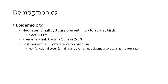Epidemiology: small cysts are present in up to 98% of women, with around 20% measuring more than 1 cm. Pre-menarche cysts more than 1 cm occur in 2 to 5%. Post-menarche cysts are very common. Non-functional cysts and malignant ovarian neoplasms also occur at a greater rate.